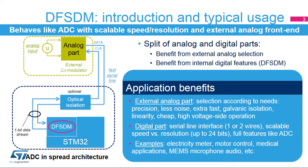The external analog part is usually a Sigma Delta modulator offered by a wide range of vendors. This feature offers the possibility to choose a specific analog part according to the user needs, like galvanic isolation for motor control or metering applications, with a low-noise and high-precision analog part for sensor data acquisition applications, or an inexpensive analog part for price-sensitive applications.